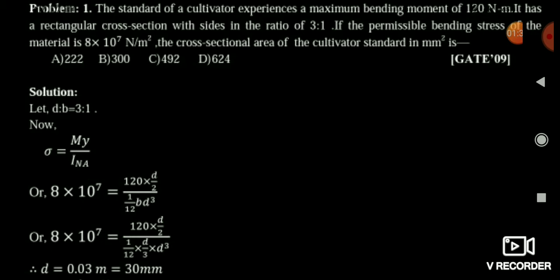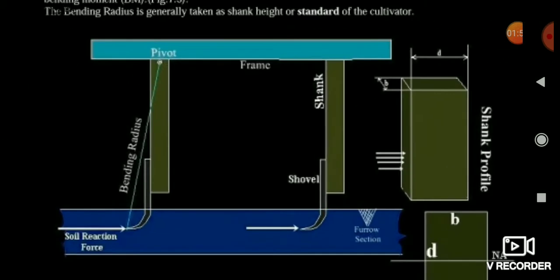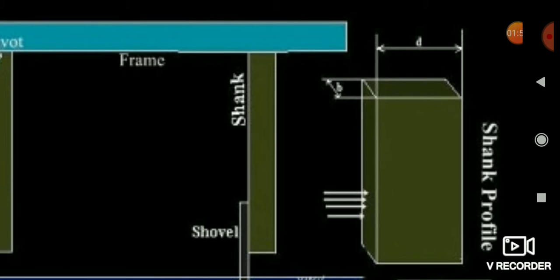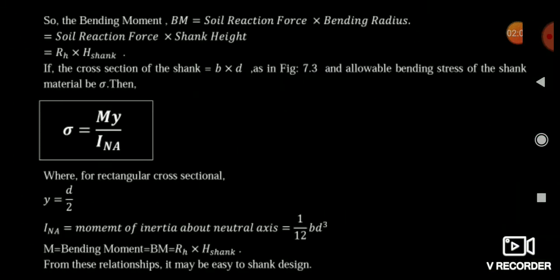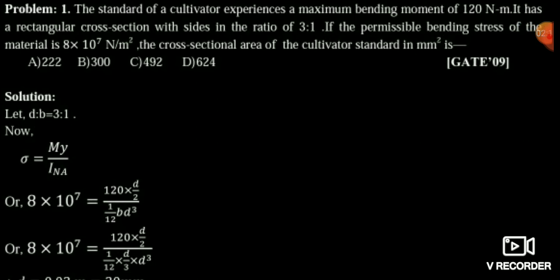The cross-sectional side ratio 3:1 is nothing but the ratio D:B. Here D is the depth and B is the thickness, and D is always greater than B. So D:B = 3:1, meaning D = 3x and B = x.